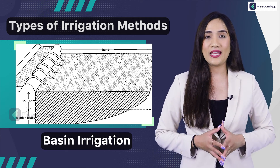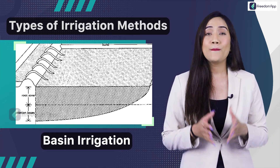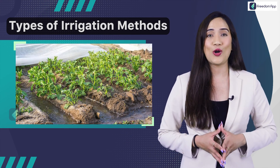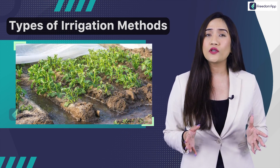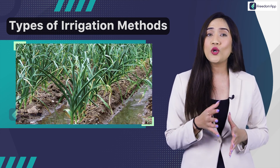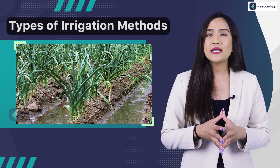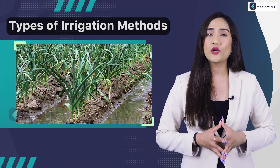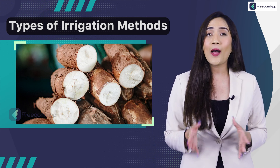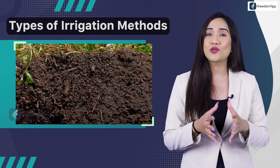Basin irrigation is suitable for many field crops. It is generally not suited for crops that cannot stand in wet or waterlogged conditions for periods longer than 24 hours. These are usually root and tuber crops such as potatoes, cassava, beet, and carrots, which require loose, well-drained soils.